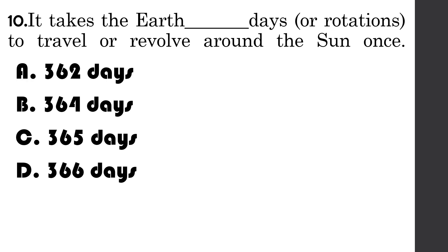Number 10: It takes the earth blank days or rotations to travel or revolve around the sun once. A. 362 days, B. 364 days, C. 365 days, D. 366 days.